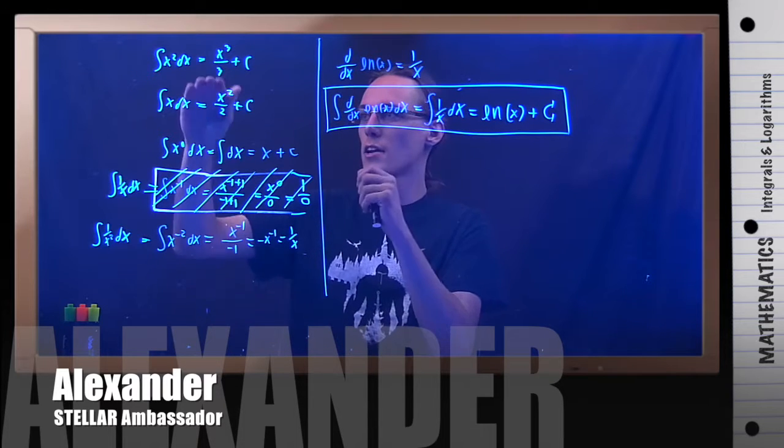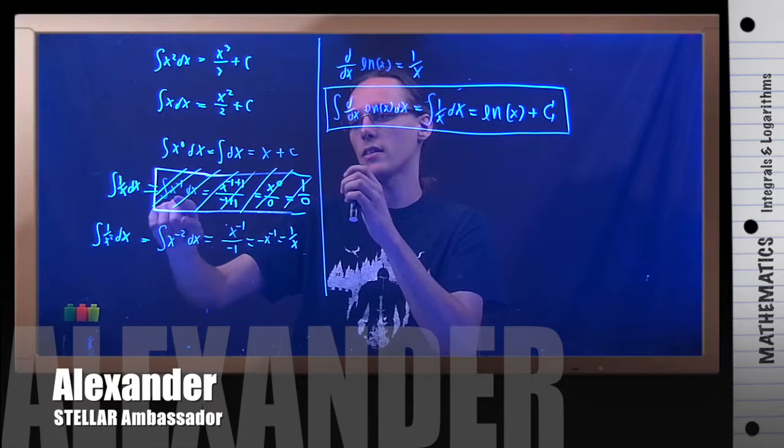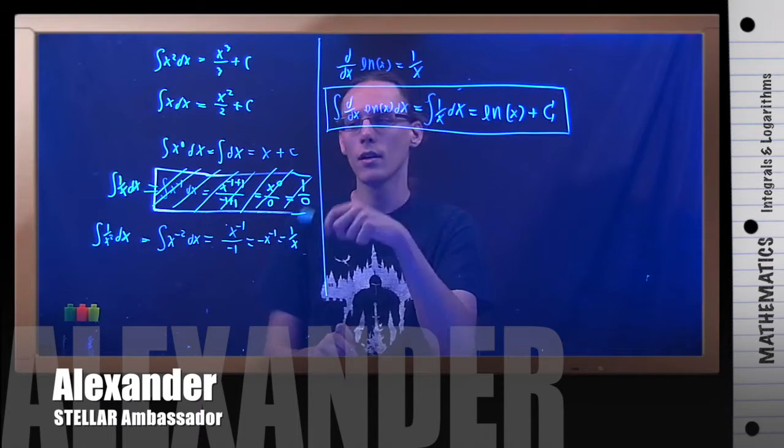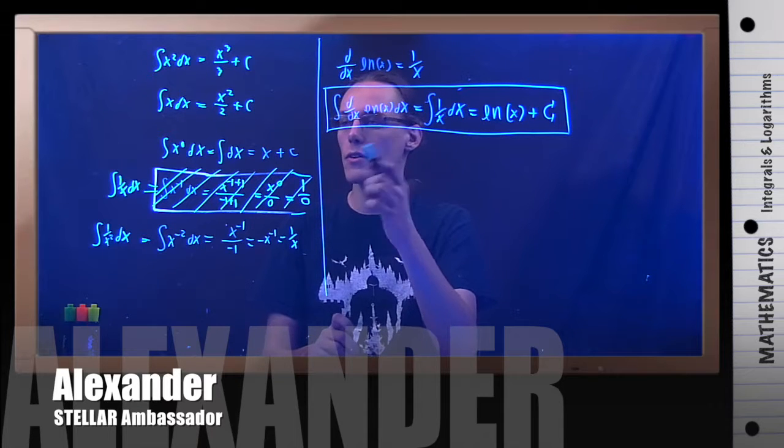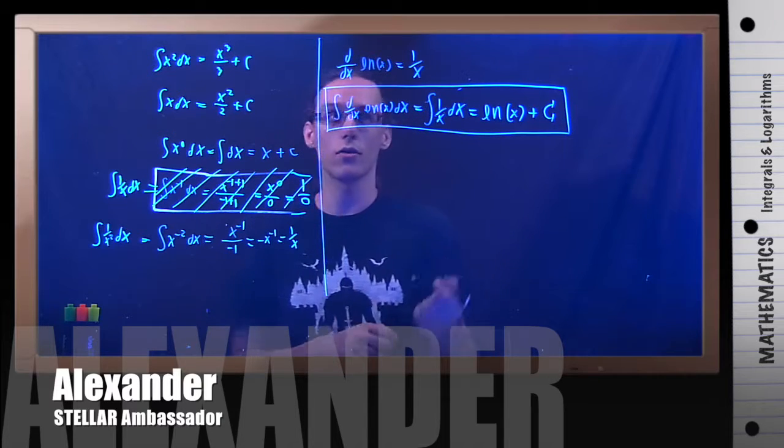It's because just applying your general properties here, this fails with x to the negative 1 because you wind up with a division by 0, which is not allowed. So you have to do some more digging around and you figure out that, oh, actually this one particular case, integral of 1 over x is natural log.